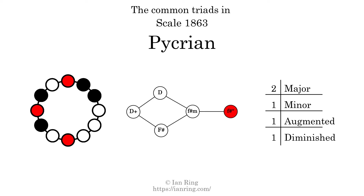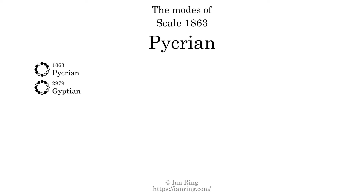Here is a Hamiltonian path of parsimonious voice leading that uses all the triads. This scale has seven modes. The first mode is itself. The second mode is scale 2979, also known as Gyptian. It sounds like this.